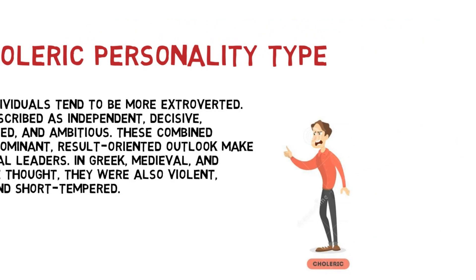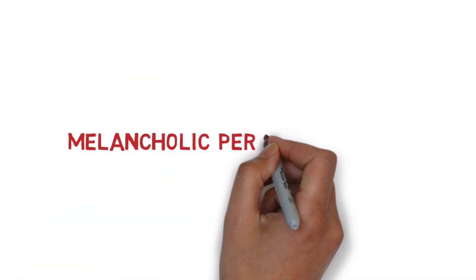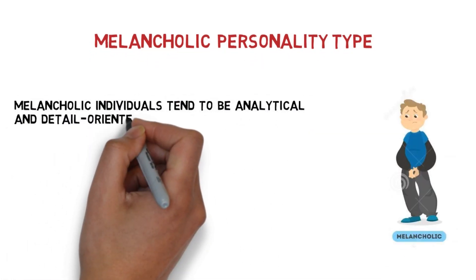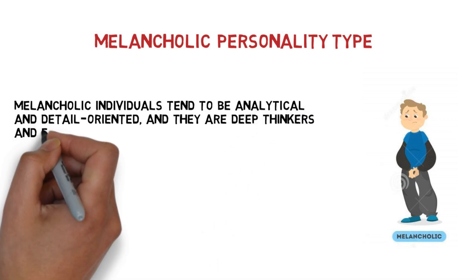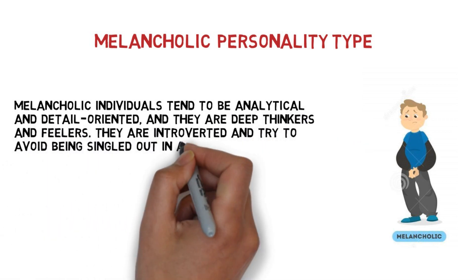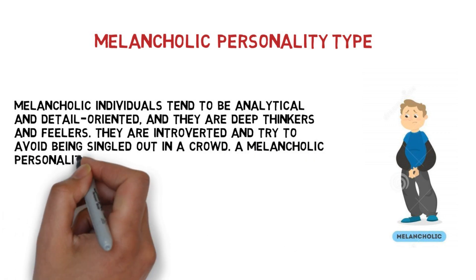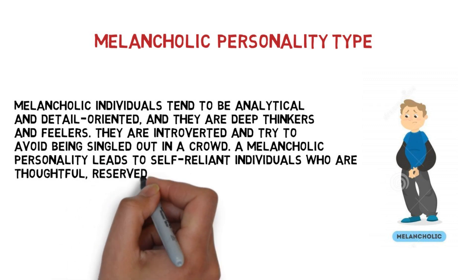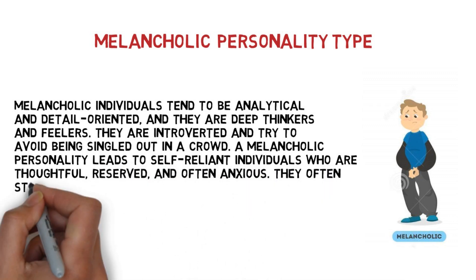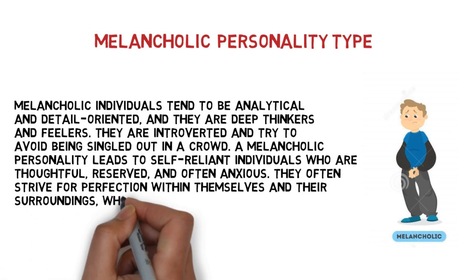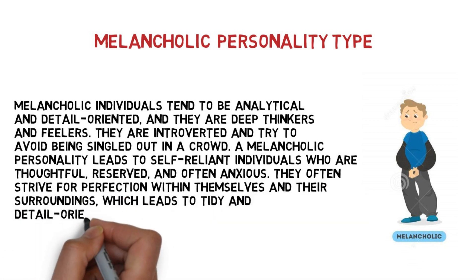The next is melancholic personality type. Melancholic individuals tend to be more analytical and detail-oriented, and they are deep thinkers and feelers. They are introverted and try to avoid being singled out in a crowd. Melancholic personality leads to self-reliant individuals who are thoughtful, reserved, and often anxious. They often strive for perfection within themselves and their surroundings, which leads to tidy and detail-oriented behavior.